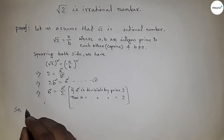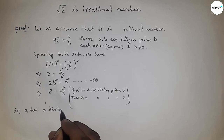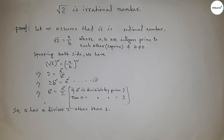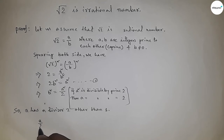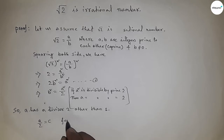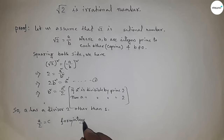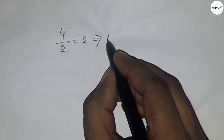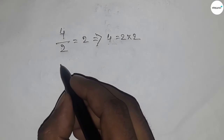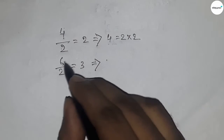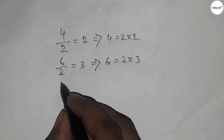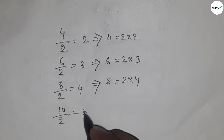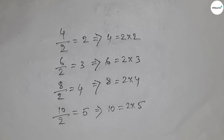So a has a divisor 2 other than 1. We write a divided by 2 equals c for some integer c. For instance, 4 divided by 2 gives quotient 2, so 4 equals 2 times 2; 6 divided by 2 gives 3, so 6 equals 2 times 3; 8 divided by 2 gives 4, so 8 equals 2 times 4.